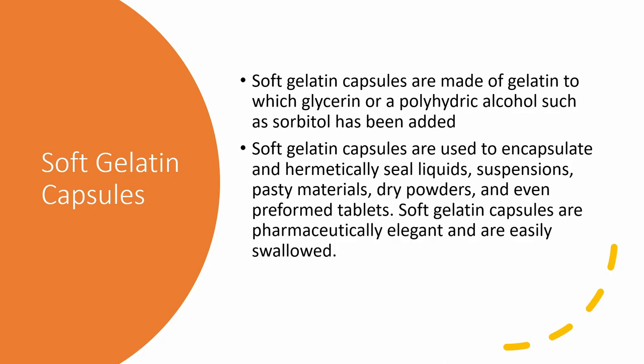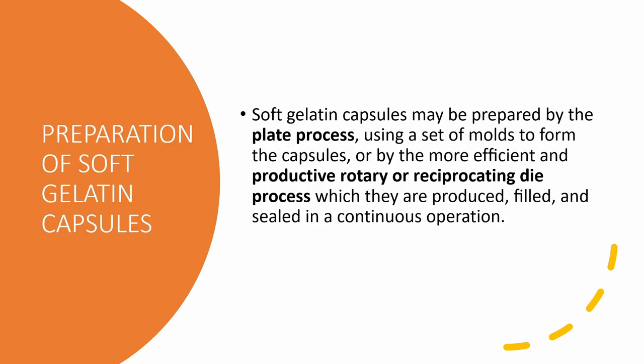Soft gelatin capsules are made of gelatin to which glycerin or a polyhydric alcohol such as sorbitol is added. They are used to encapsulate hermetically sealed liquids, suspensions, pasty materials, dry powders, and even preformed tablets. Soft gelatin capsules are pharmaceutically elegant and are easily swallowed. The most common soft gelatin capsules you will encounter are vegetable oil capsules — particularly cod liver oil in soft gelatin form. They may be prepared by the plate process using a set of molds, or a more efficient rotary or reciprocating die process in which they are produced, filled, and sealed in a continuous operation.